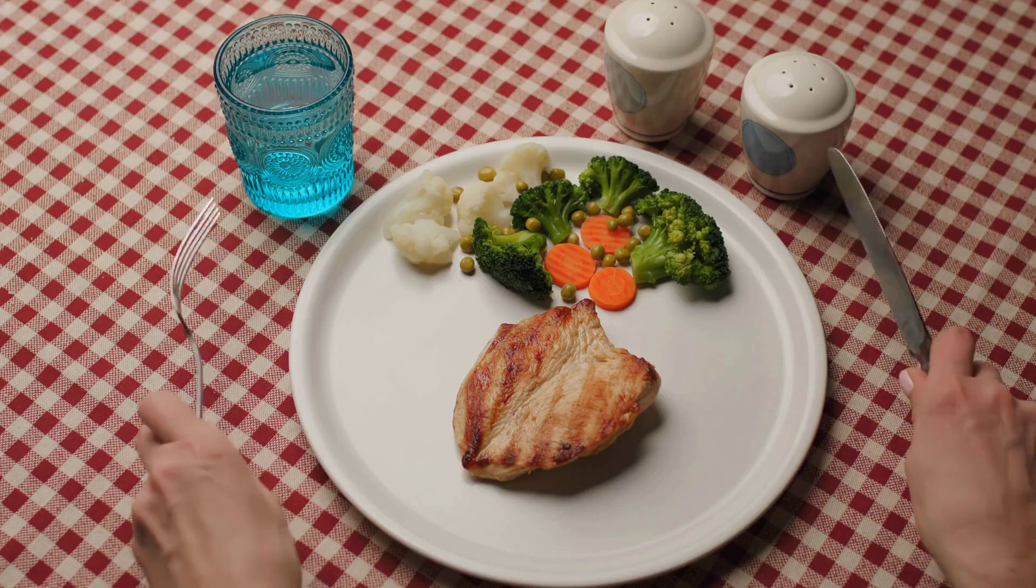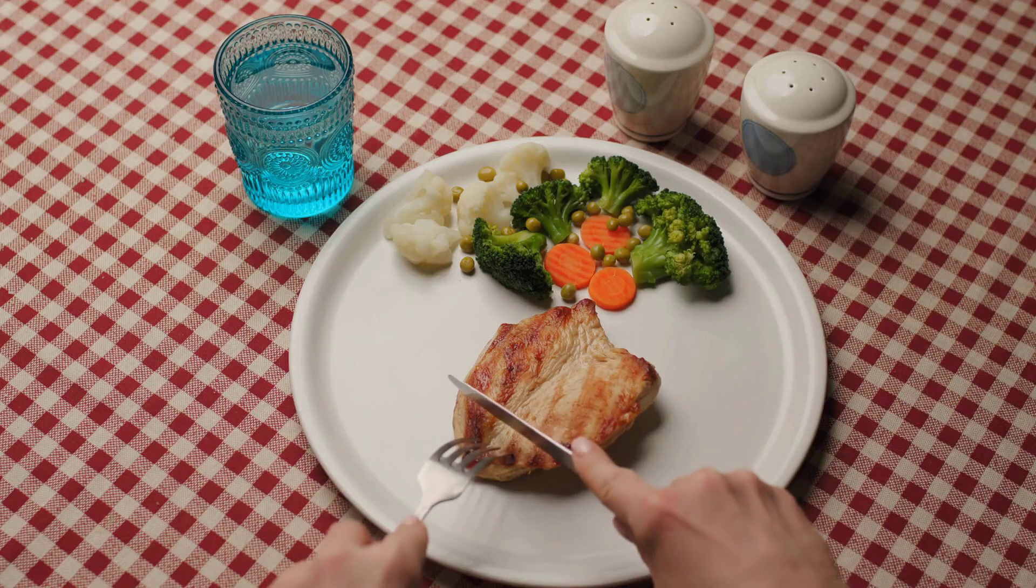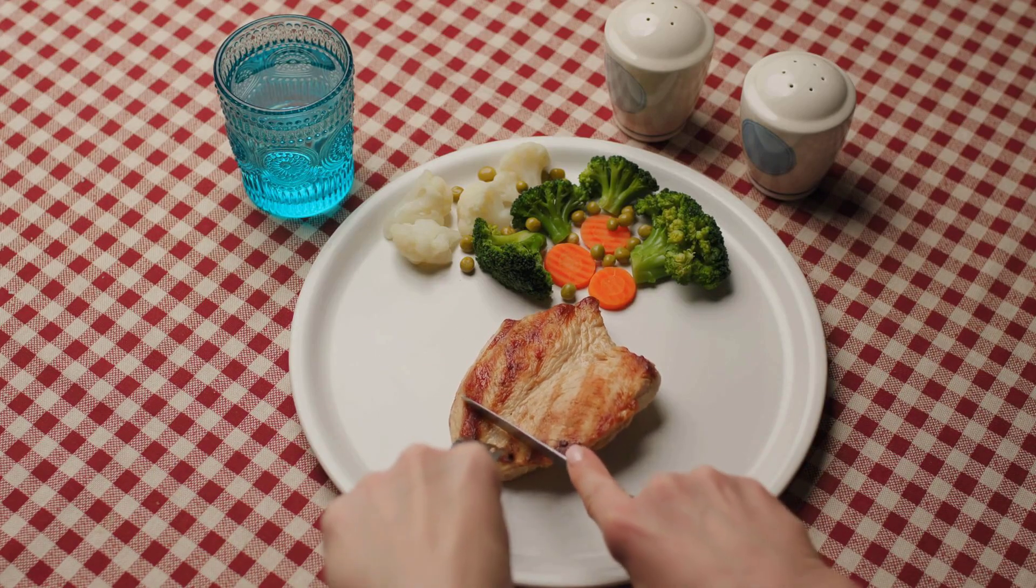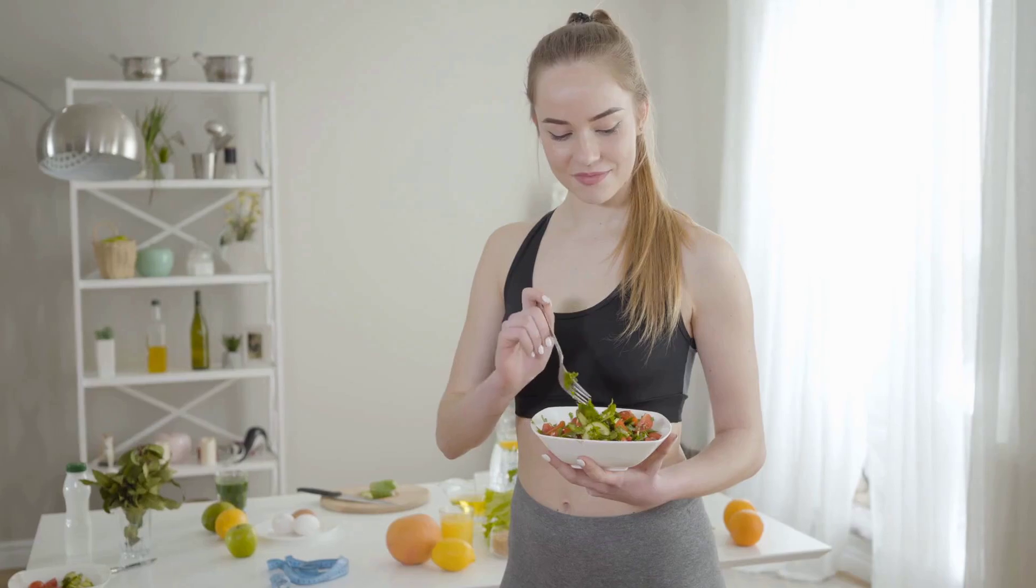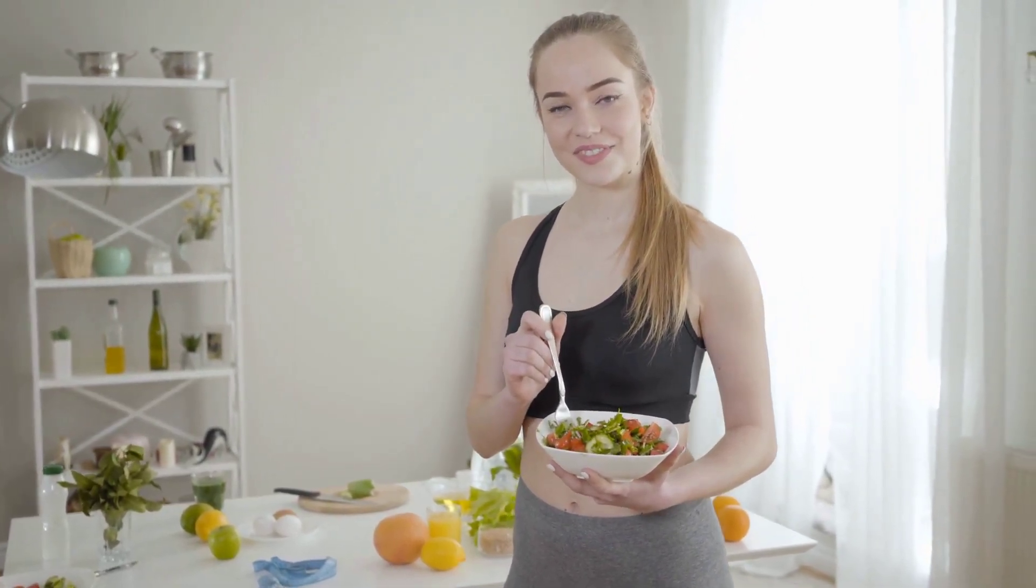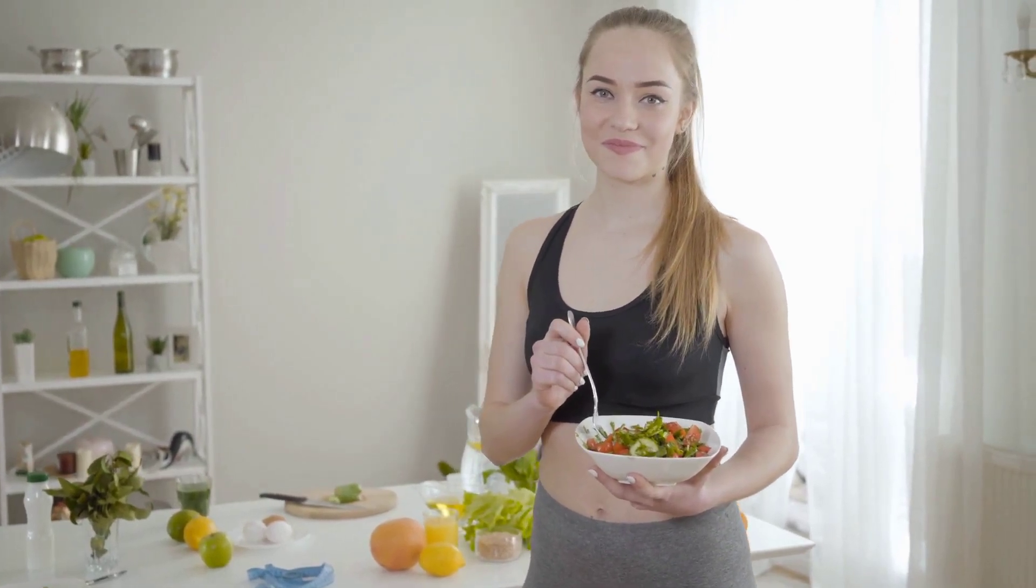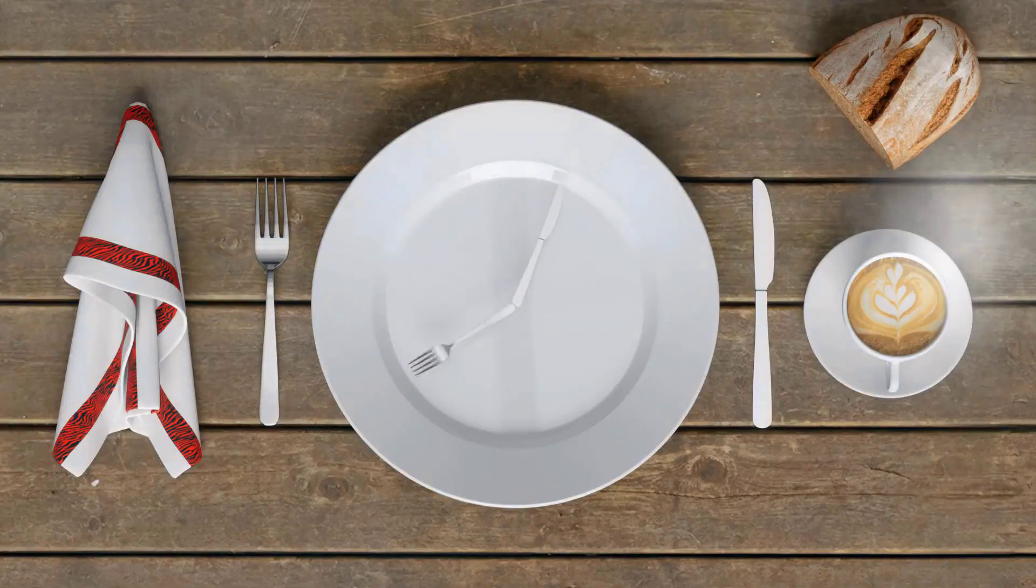Alternate day fasting involves alternating between days of normal eating and days of significant calorie restriction, often around 500 calories. The 5-2 diet means eating normally for 5 days a week and restricting calories on the other two non-consecutive days. Time-restricted eating, or TRE, is perhaps the most popular form.